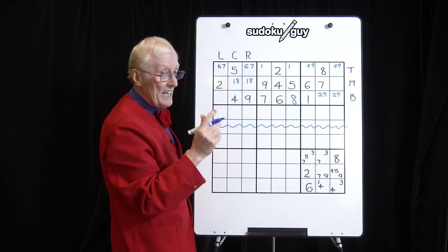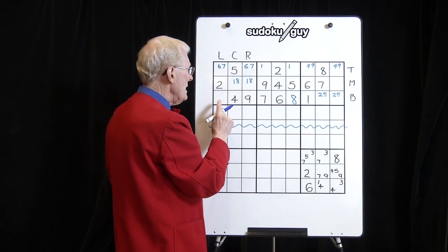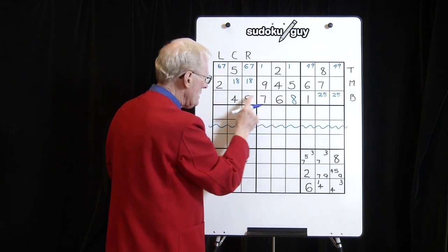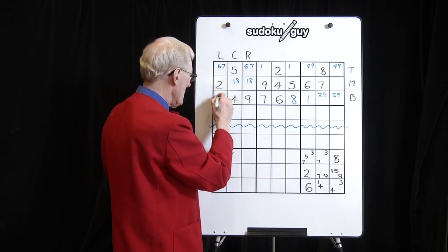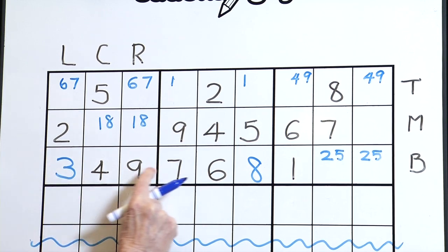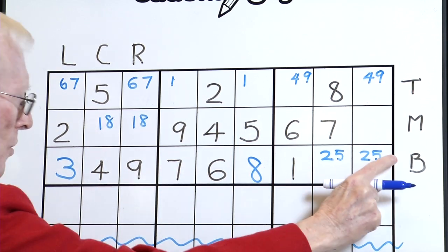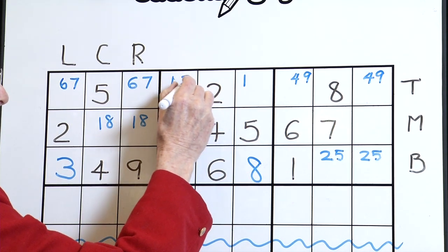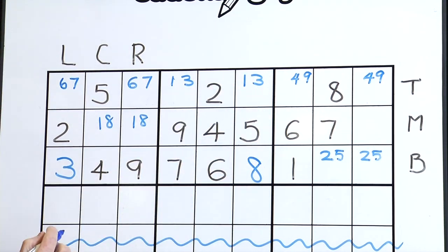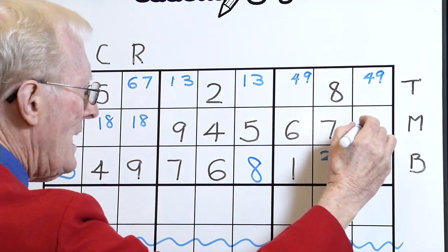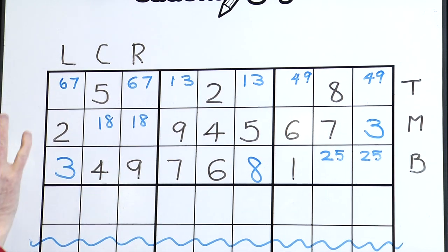Now we're going to see that if you've got a matching pair and there's only one cell left, let's count up and see what's missing — one, two — it's a three. Now we know a three can't go anywhere in these blocks because they're all taken up. It has to go up there and in there, so we have another matching pair. With a three down here and a three up here, this row has a matching pair.